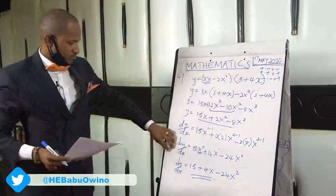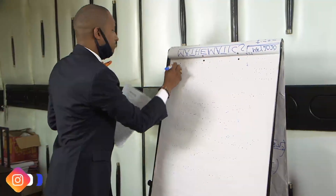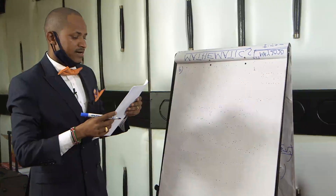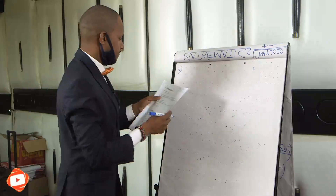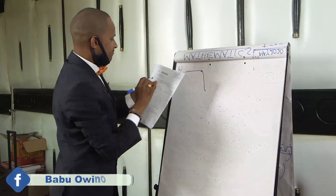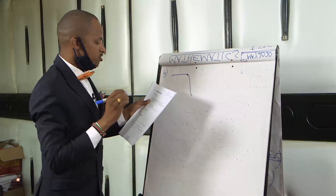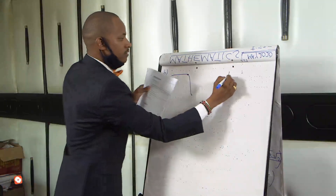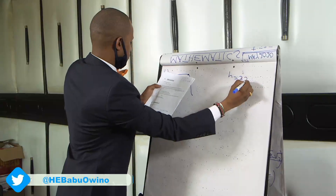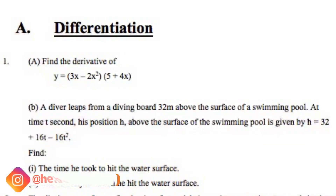Proceeding to part B of the equation. A diver leaps from a diving board 32 meters above the surface of a swimming pool. At time t seconds, his position h above the surface of the swimming pool is given by h equals 32 plus 16t minus 16t squared. The first part of this question asks: find the time he took to hit the surface of the water.